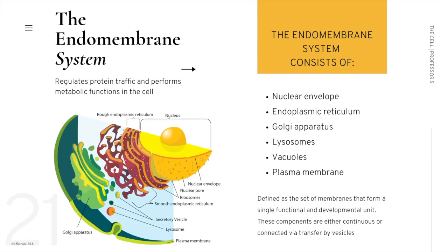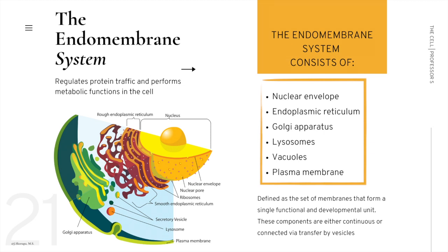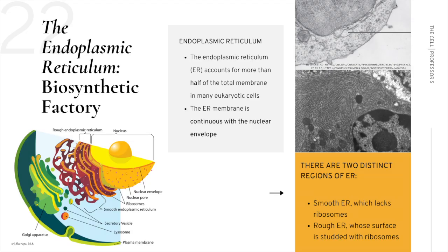Next we are moving on to the endomembrane system. This system contains a number of organelles central to creating and exporting proteins. Together, the components regulate protein traffic and perform metabolic functions in your cells. The endomembrane system consists of the nuclear envelope, the endoplasmic reticulum, the Golgi apparatus, lysosomes, vacuoles, and the plasma membrane. These components are either continuous — physically connected — or connected by transfer vesicles, which shuttle products from one organelle to another. We'll begin with the endoplasmic reticulum, which serves as the biosynthetic factory.